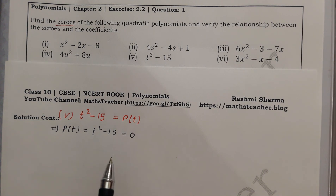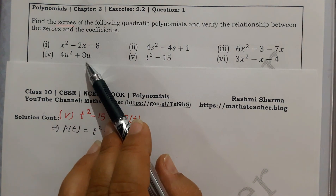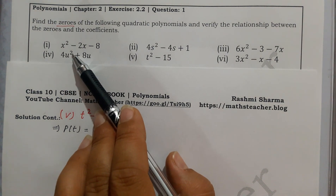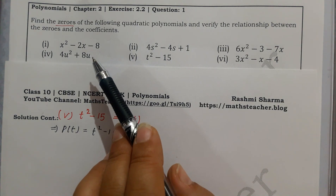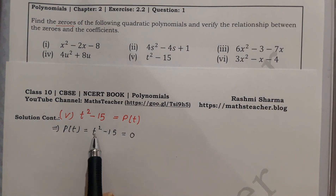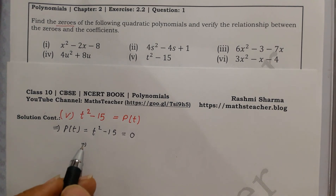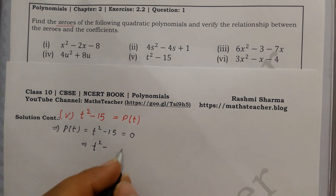We can't solve by splitting the middle term, so we use another method. We recognize this as a difference of squares: a squared minus b squared. Here, t squared is a squared, and 15 can be written as under root 15 squared, so b equals under root 15.